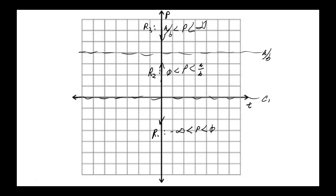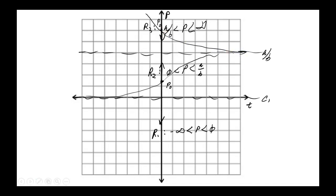If p(0) equals some initial value p₀ in R₂, the function must be increasing everywhere in that range, approaching a/b as a horizontal asymptote. If p₀ is in R₃, we don't know what happened for t less than 0, but the solution approaches a/b from above.